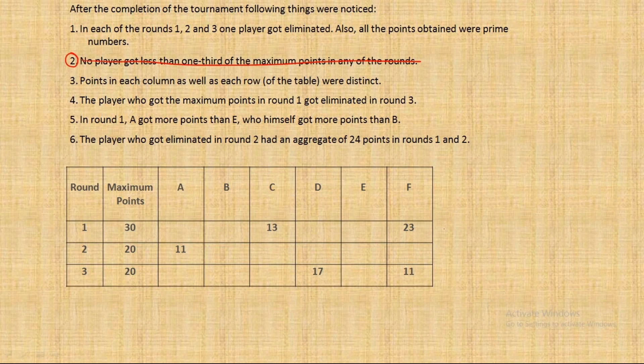And since each number is a prime number, that's written in the first point, which means that the prime numbers greater than 10 and less than 30 which are not mentioned here in the first round are 11, 13 is mentioned so 17, 19, then 23 is mentioned then 29. See exactly four prime numbers were remaining and exactly four places are blank.